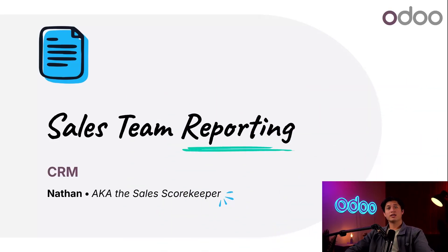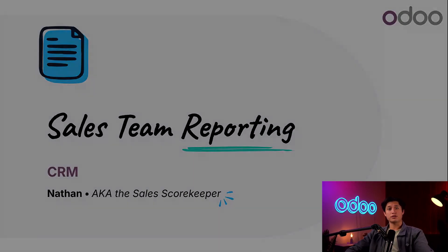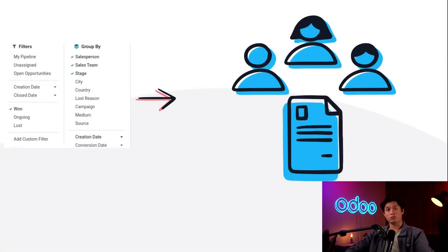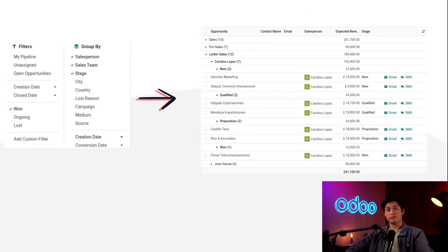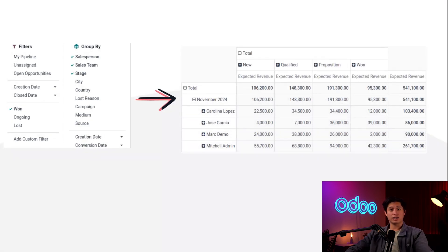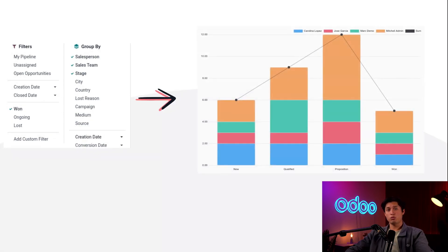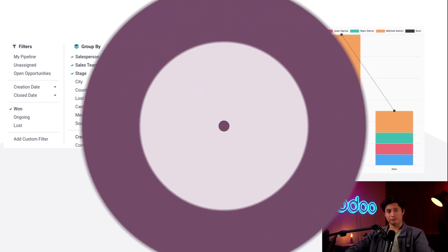What's up Odooers! Today we'll be taking a look at how you can use Odoo's CRM app to generate reports to analyze your sales team's performance. This can be used to group and filter across sales teams and metrics, quantify performance analytics such as expected revenue, and see how well sales teams are performing overall. So let's dive into our database to see how it's all done.